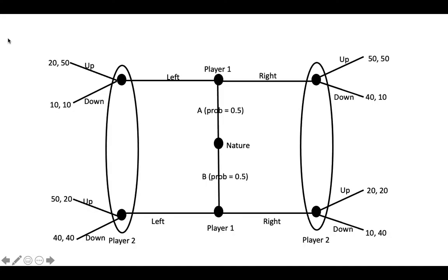Let's consider the extensive form of a basic signaling game. This extensive form is a bit different from others that you might have seen, because instead of reading it from top to bottom or left to right, you read this game from the center outward. Nature moves first and determines whether player 1 is type A or type B. Since player 1 is equally likely to be either type, you can think of nature as determining the outcome of a coin toss.